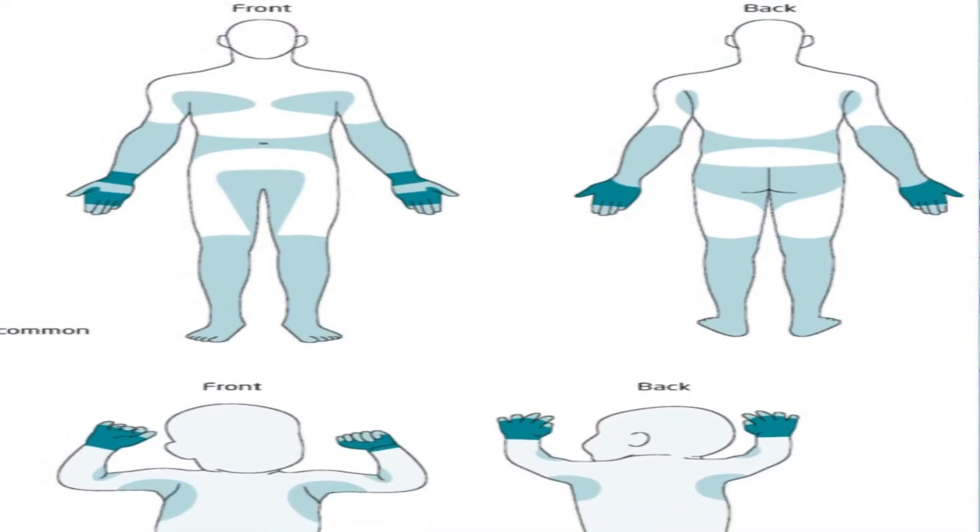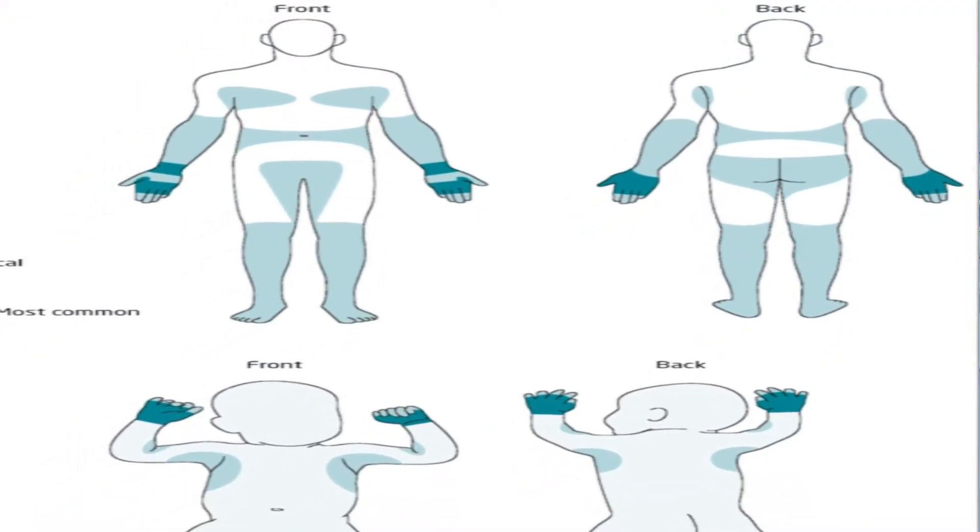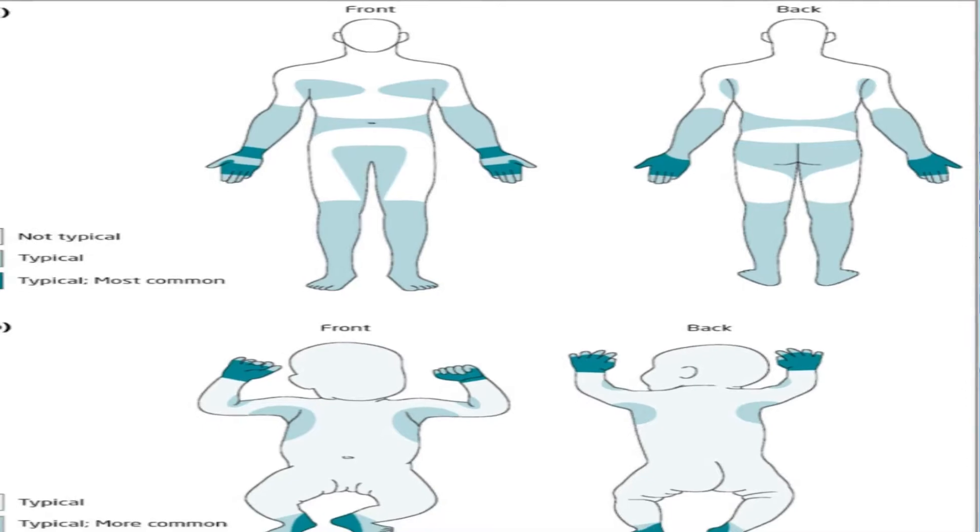Ordinary scabies lesions are typically found in specific areas of the body, such as the hands, the wrists, the elbow, the armpits, the genital areas, the buttocks, the feet, the waistline, and the breasts. Intense itching, especially at night, is a common feature of scabies, but for some people itching is mild or non-existent.